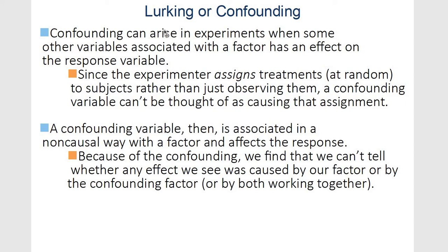Confounding can arise in experiments. Since the experimenter assigns treatments at random, a confounding variable can't be thought of as causing that assignment. Confounding was the example of all cats having one food and all dogs having the other — we just can't tell whether the effect was caused by the food or the species. So there's no cause or effect to determine there.